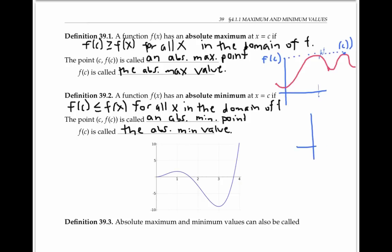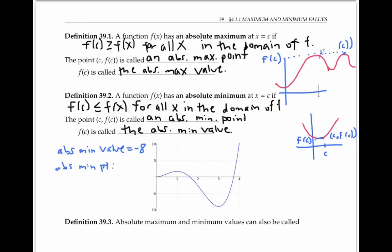In the graph of f of x, f of c is the lowest point that the function achieves anywhere on its domain, and (c, f(c)) are the coordinates of a point where the function achieves that minimum value. For example, this function has an absolute minimum value of about negative eight, and an absolute minimum point with coordinates (3, -8).